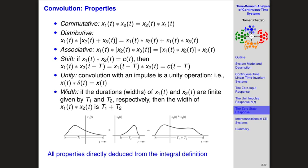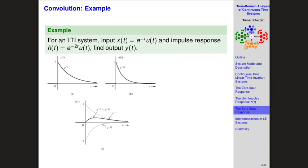We will solve an example on convolution for two purposes: first, to practice the operation, and second, to learn something very important from it. The system is linear time-invariant. The input X(t) is an exponential multiplied by the unit step, so it only exists on the positive side. The impulse response H(t) is also an exponential with a different exponent, also only on the positive side.